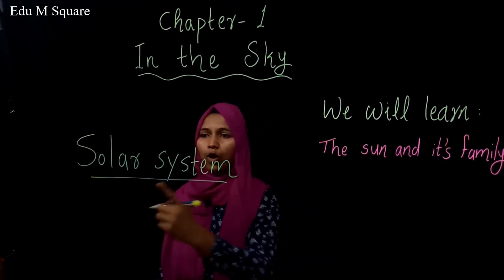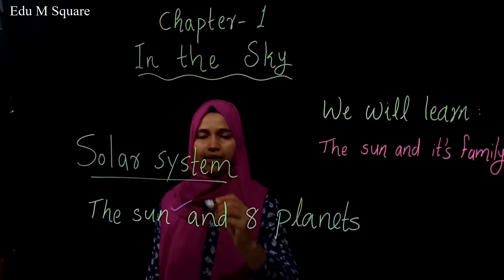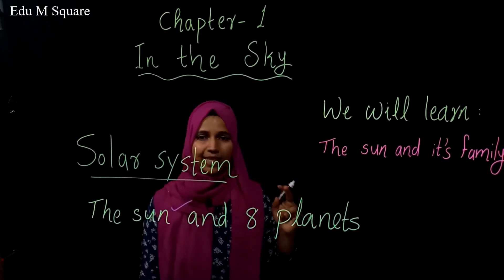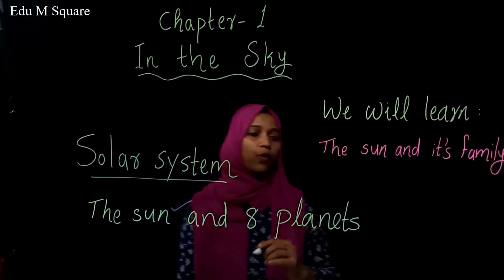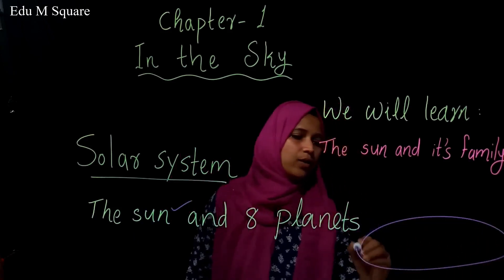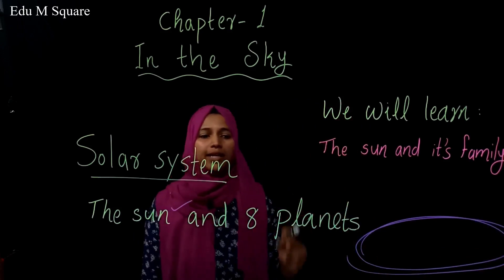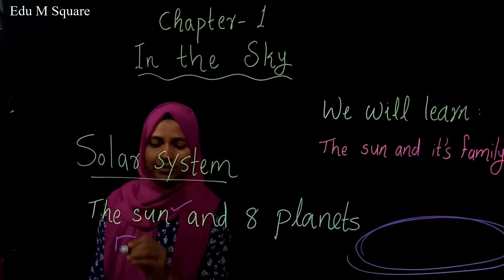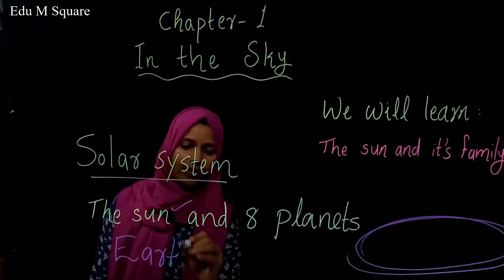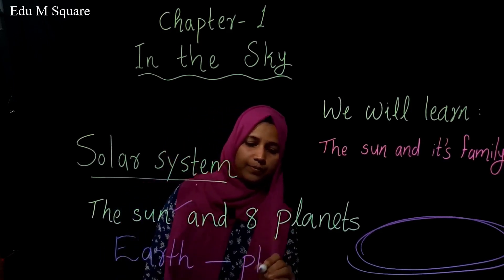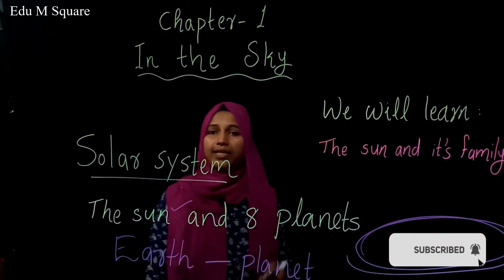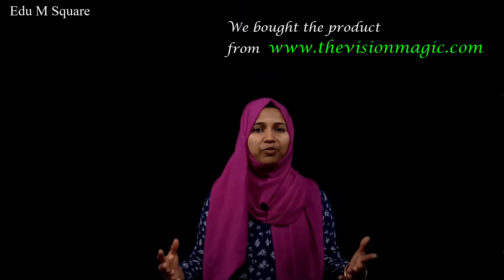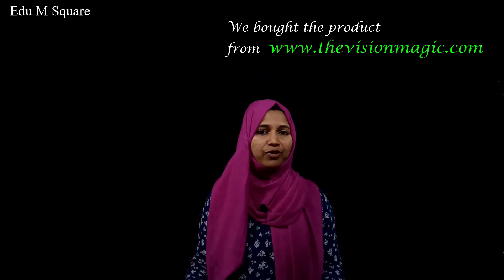Now let's check the members of the solar system. Do you know the sun? Sun is a star. Then what is a planet? A planet is an object — a thing that revolves, that moves around a star. That object is called a planet. Do you know our earth is a planet? Earth is a member of the solar system. Now let us watch a wonderful AR technology-based 3D video of the solar system.